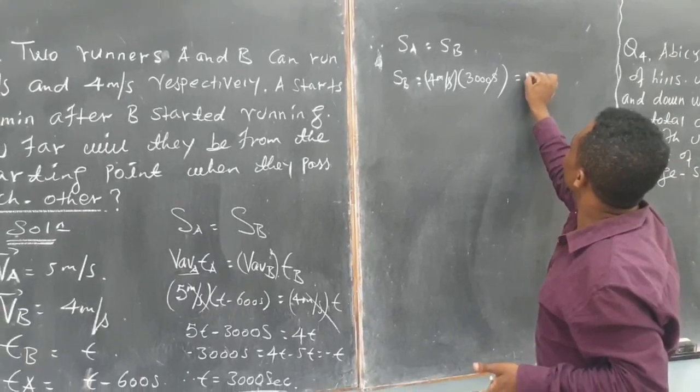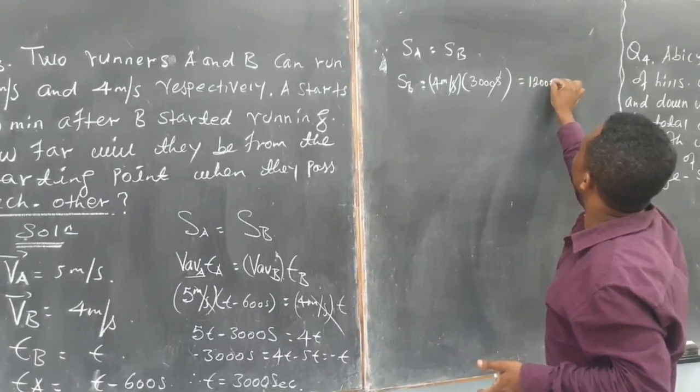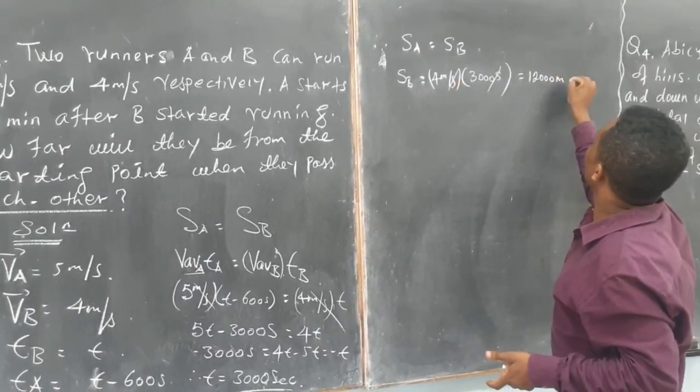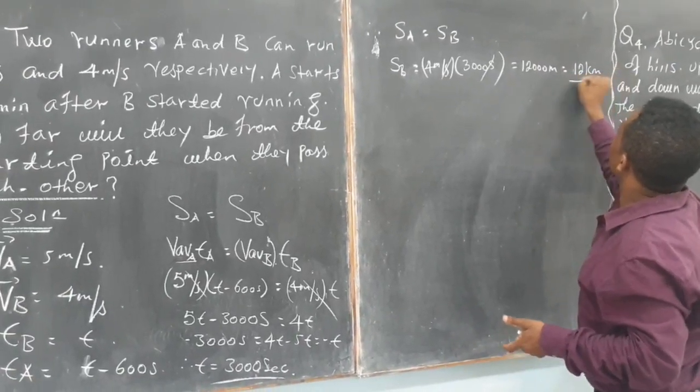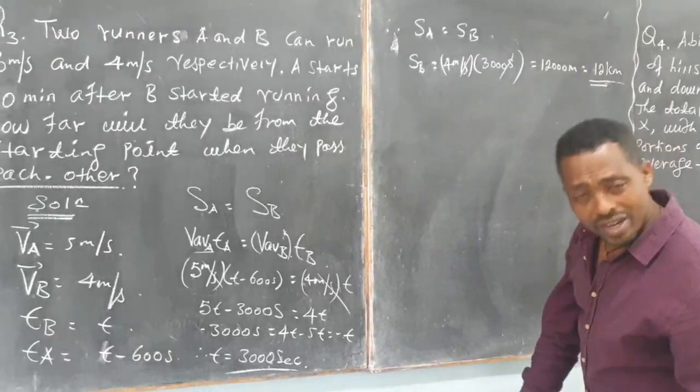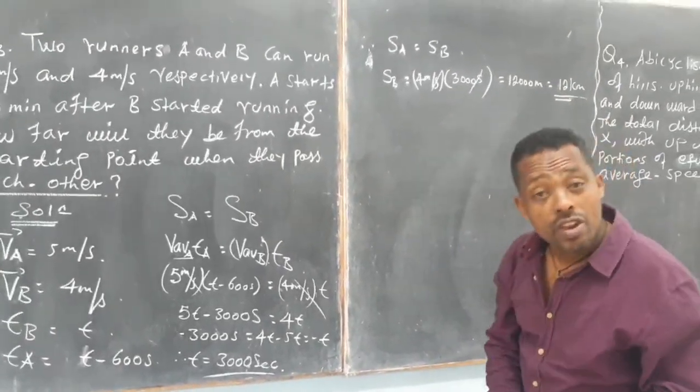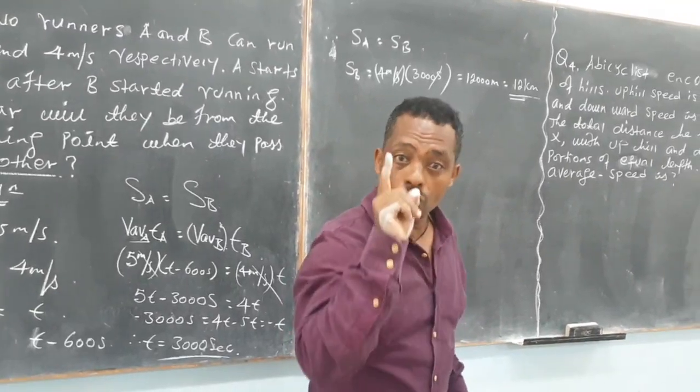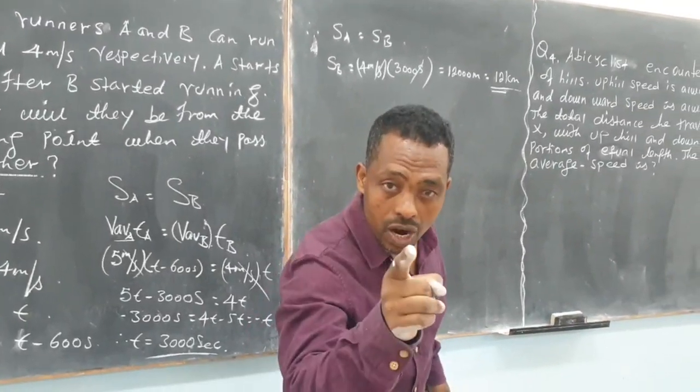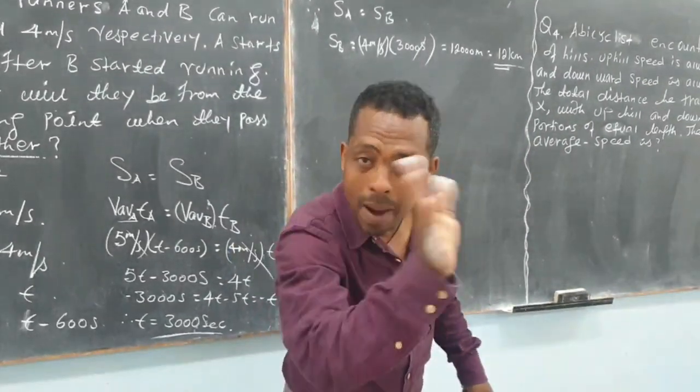It becomes 12,000 meters or simply 12 km. So, we have the time for runner B. That is the skill we did. Thank you for watching. Please, don't forget to like it and subscribe to it. Thank you. Bye bye.